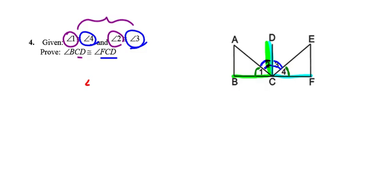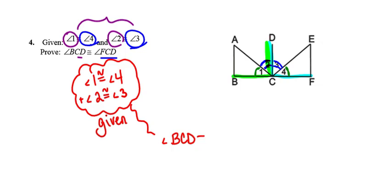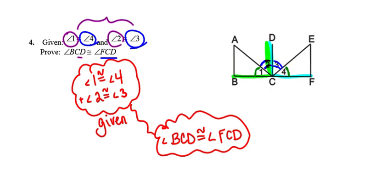I start with the two pairs of congruent angles — 1 and 4, 2 and 3 — given. Then I add: angle 1 plus angle 2 gives angle BCD; angle 4 plus angle 3 gives angle FCD. The geometric shapes are angles, the operation is addition — it's the angle addition theorem.